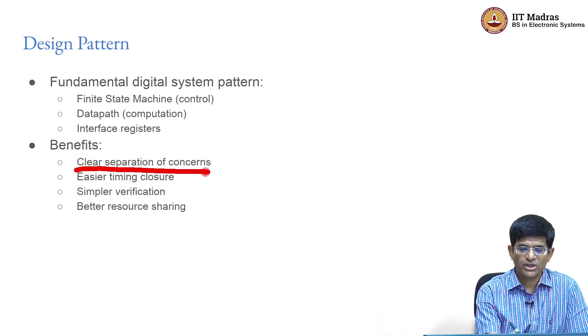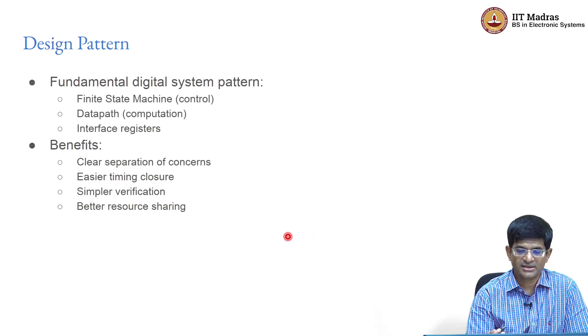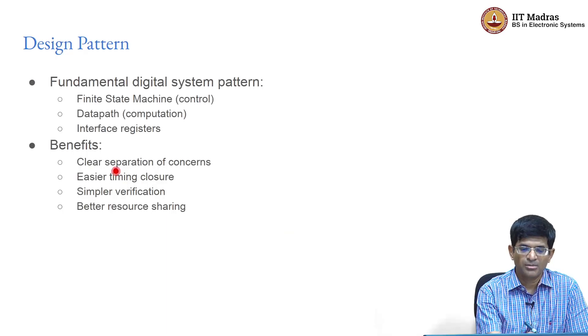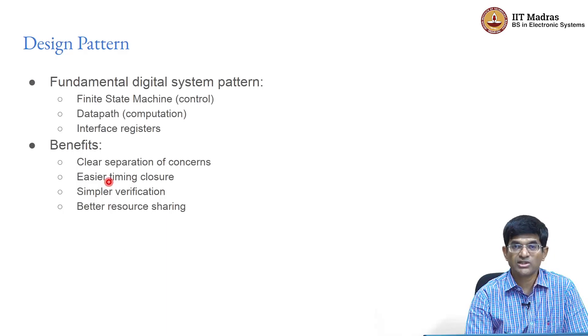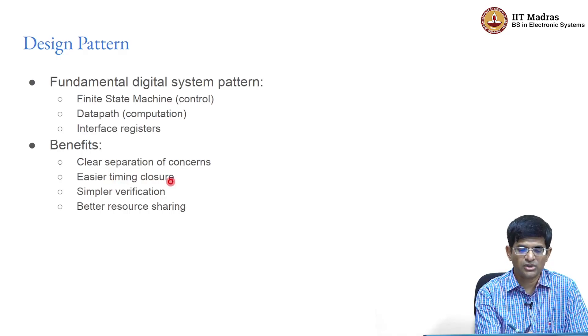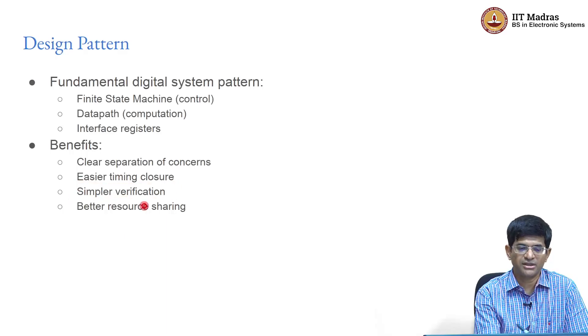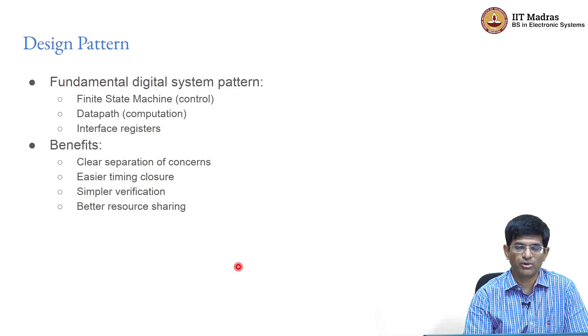This is a fundamental design pattern used in digital system design. It talks about the finite state machine to perform control logic, data path to perform computation, and interface registers that allow different components of the system to talk to each other. This notion of separation of concerns says that we have separated out functionality. We have identified one part of the circuit that needs to perform computation and another part that needs to perform control, and we can now do separate timing optimization, separate verification, perhaps even resource sharing across these different aspects.